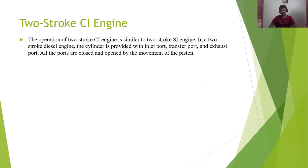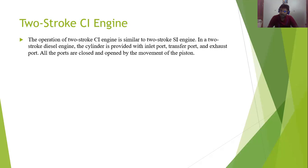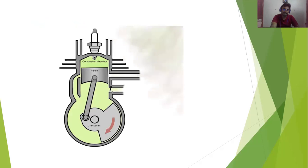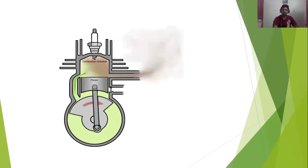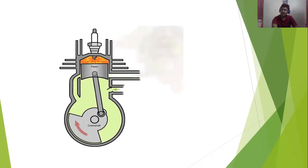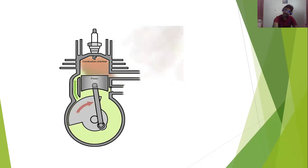Now studying the two-stroke CI engine — Compression Ignition engine. The operation of the two-stroke CI engine is very similar to the two-stroke SI engine. The cylinder has an inlet port, transfer port, and exhaust port — all opened and closed by the movement of the piston, same as the SI engine. The complete operation for two-stroke engine applies to both: the only difference is if you consider a spark plug at the top it's the two-stroke SI engine; if you consider a fuel injector at the top it's the two-stroke CI engine.